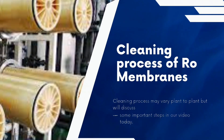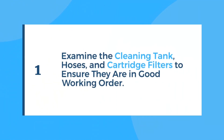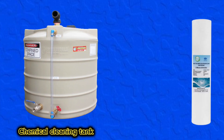The cleaning process of RO membranes may vary from plant to plant, but we'll discuss some important steps in this video. Step 1: Examine the cleaning tank, hoses, and cartridge filters to ensure they are in good working order. Clean the tank and hoses if necessary, and install new cartridge filters.